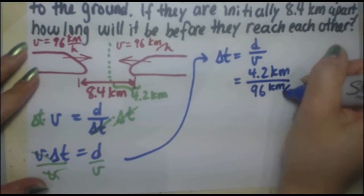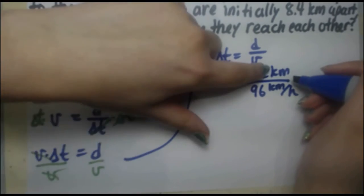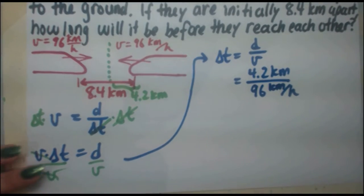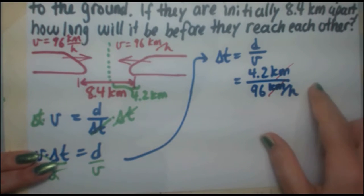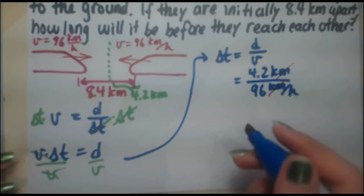Normally, you would convert the units, but in this case, they match up. You've got kilometers, kilometers per hour. Everything's working out, so the kilometers cancels out with the kilometers. Because you have 1 over H in the denominator, if you actually bring that H up to the numerator, it becomes hours as the time.